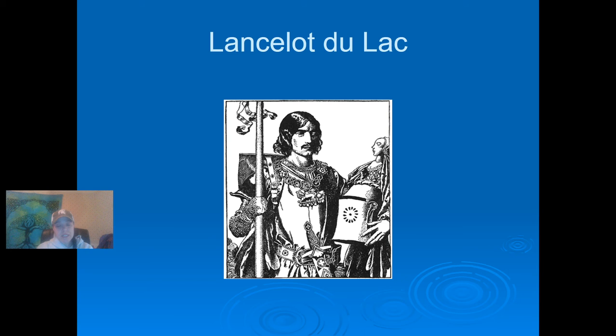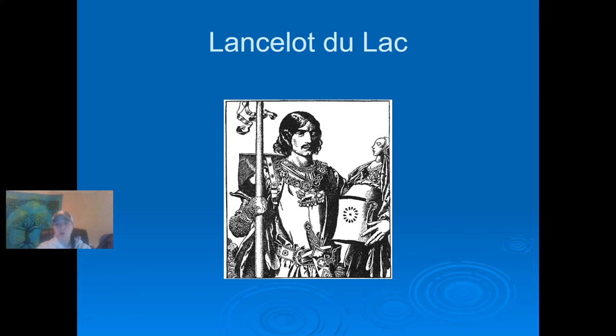Legend also says that Lancelot was the father of Galahad by Elaine — a different Elaine than his mother — who died of a broken heart because Lancelot did not return her love and affection. Many sources tell us of the love shared between Lancelot and Queen Guinevere, King Arthur's wife. There may be some truth to this since Lancelot was a favorite of the queen's and he did rescue her from the stake on two different occasions. It was at one of these rescues that Lancelot mistakenly killed Sir Gareth, which then led to the whole disbandment and ruin of the Round Table. After the queen repented to an abbey as a nun, Lancelot lived the rest of his life as a hermit.